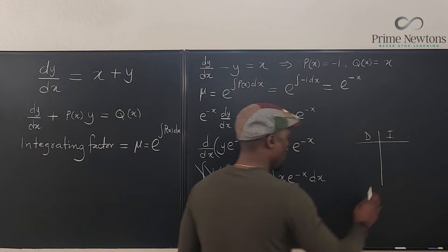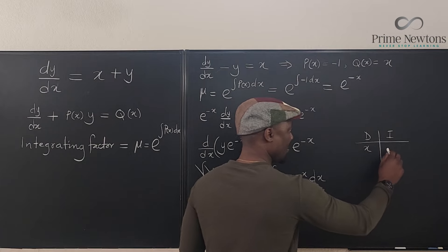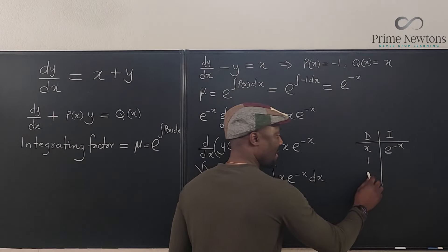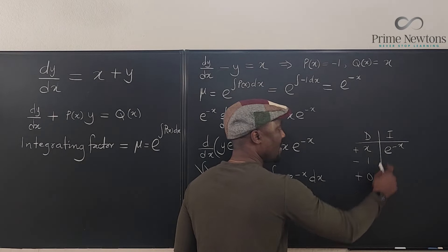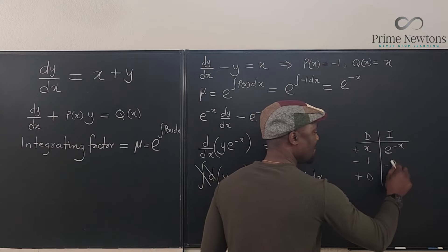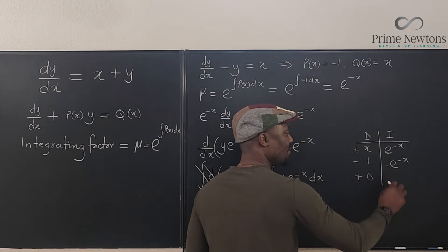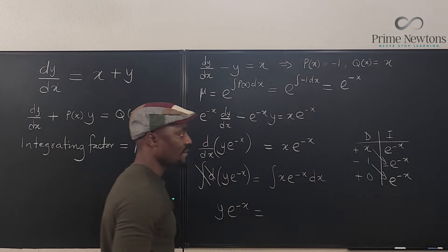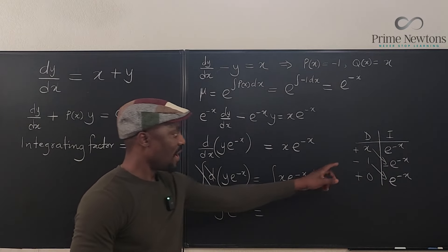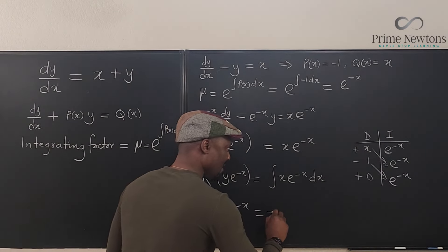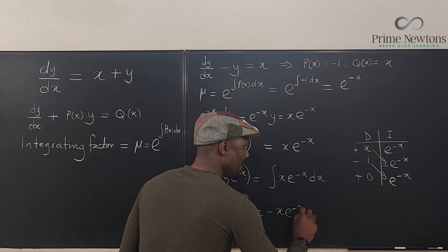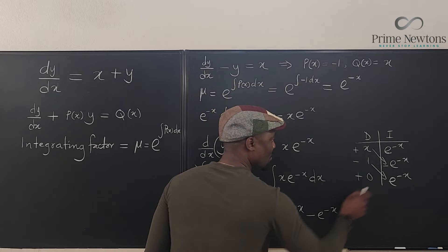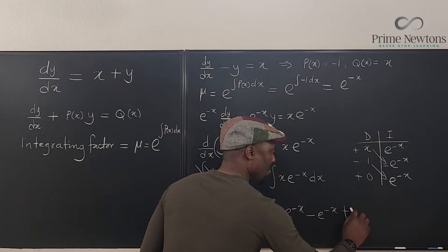Using the DI table with signs plus, minus, plus: differentiating X gives 1; differentiating again gives 0 — we stop there. Integrating e^(−x) gives negative e^(−x); integrating again gives e^(−x). Multiplying diagonally: plus times X times (−e^(−x)) gives −x·e^(−x), then minus times 1 times e^(−x) gives −e^(−x), then we reach zero so we stop. Adding plus C, the right-hand side is −x·e^(−x) minus e^(−x) plus C.